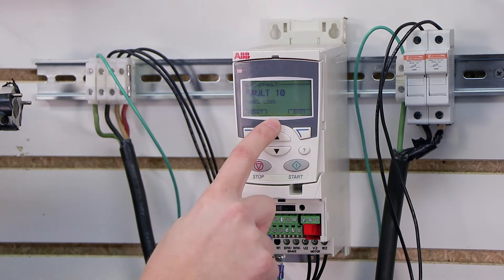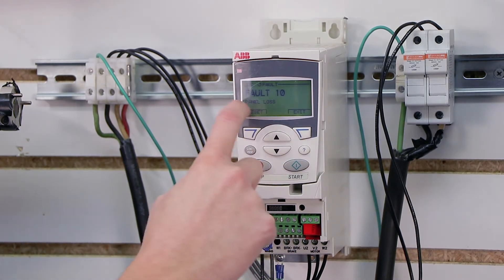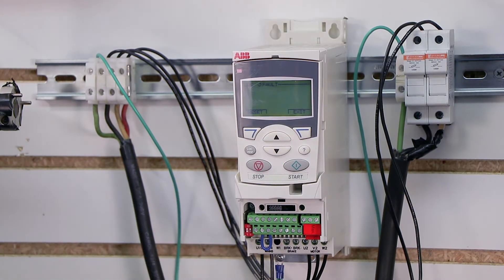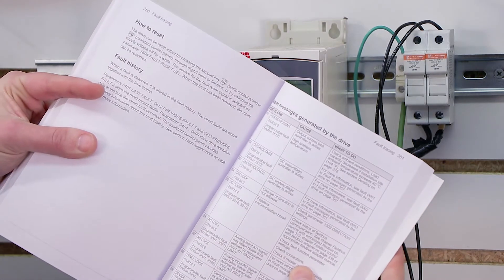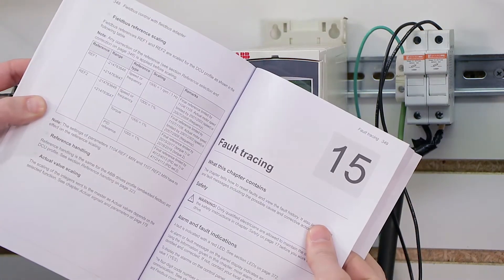Now anytime you experience a fault on the ACS355 series drive, it is going to tell you a fault code, the name of the fault, and a brief description. But most of your work is actually going to be done right here in the manual. They have a really nice, well-detailed section called fault tracing.